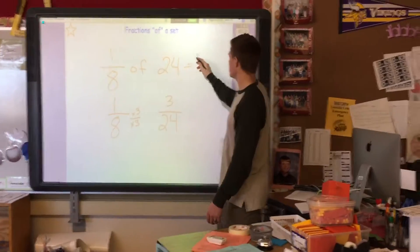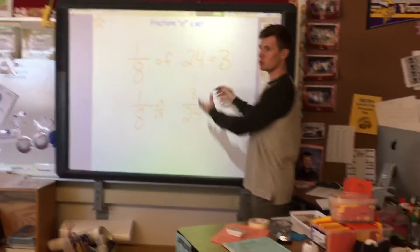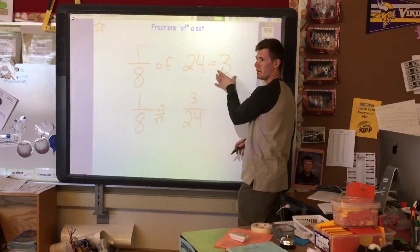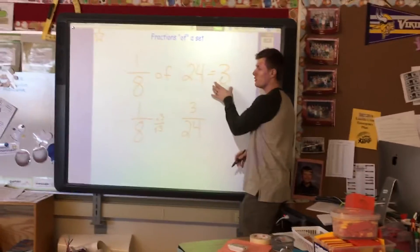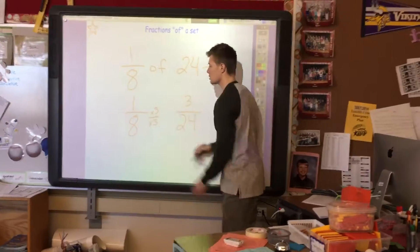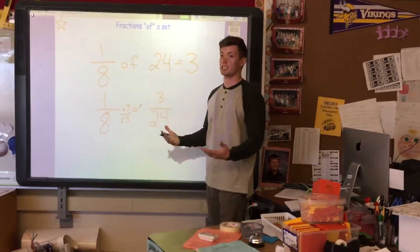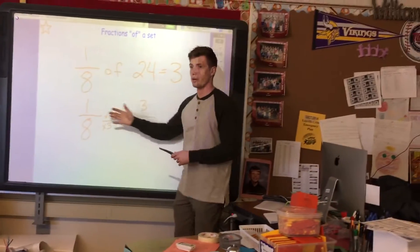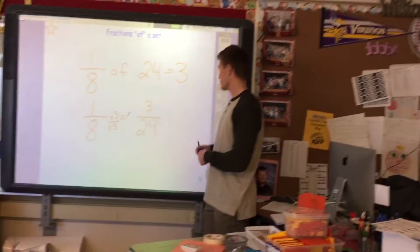So one-eighth of twenty-four is three. It would be three objects or whatever we're talking about. If this makes sense, we're just finding what these are called our equivalent fractions. This is one way to look at them. So let's try one more.